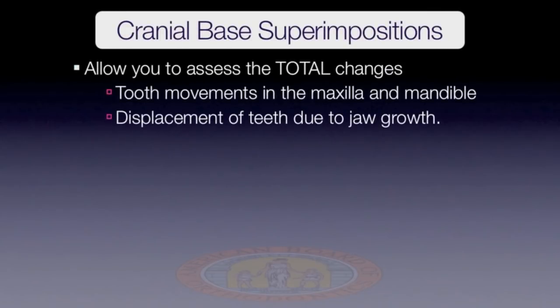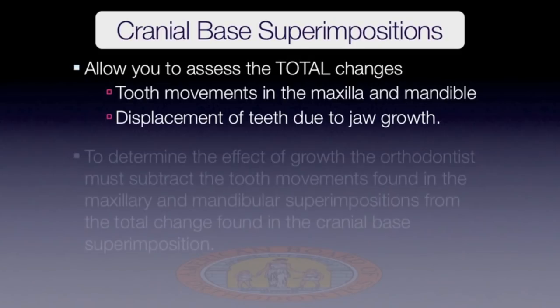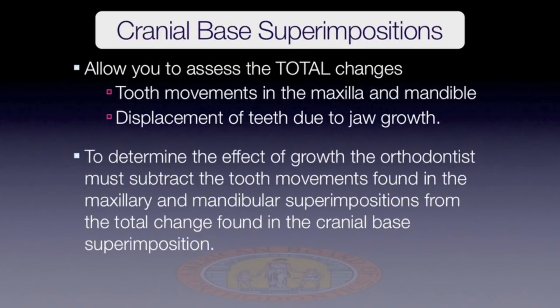Cranial-base superimpositions allow the orthodontist to assess the overall or total changes of the teeth that occur. The overall changes include both the tooth movements that occur within the maxilla and mandible along with the displacements of the teeth due to jaw growth or treatments. To determine the skeletal changes that occur, the orthodontist must subtract the tooth movements found in the maxillary and mandibular superimpositions from the total change found in the cranial-base superimposition.